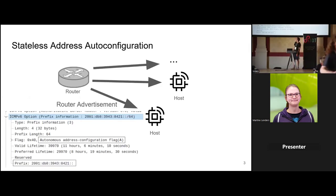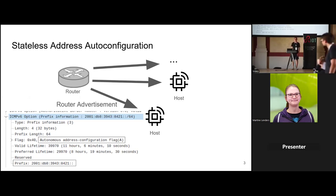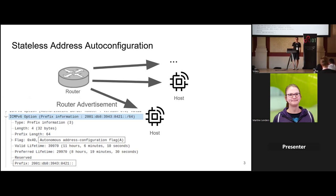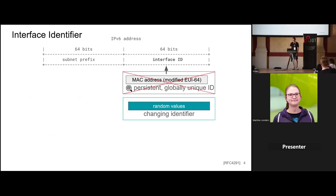Privacy extensions are extensions for SLAAC, which is the first part of IPv6 configuration. When a host connects to a network, the router sends a router advertisement with the network prefix — the first part of the IPv6 address. SLAAC is triggered by the A flag for autonomous address configuration, where the router tells the host to fill in the second half of the IPv6 address. The total IPv6 address length is 128 bits.